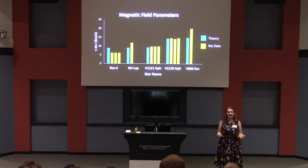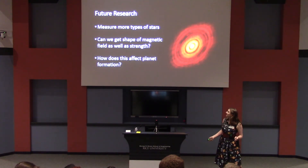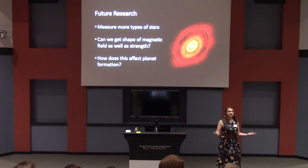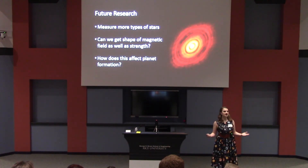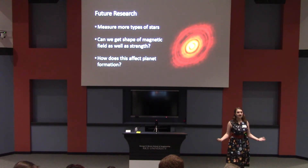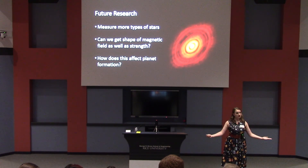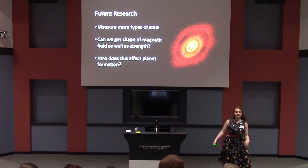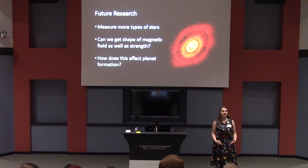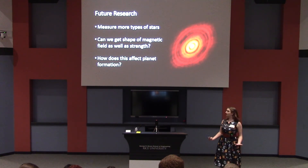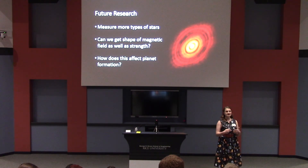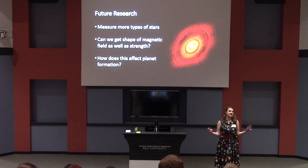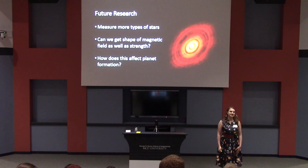So what do those bigger questions look like? Well, we definitely want to start measuring more types of stars, since stellar evolution varies a lot depending on how big your star is. We also want to see if we can get at the shape of the magnetic field in addition to just how strong it is. And finally, we want to apply this to the planet formation model so we can understand how places like our own Earth come into existence.